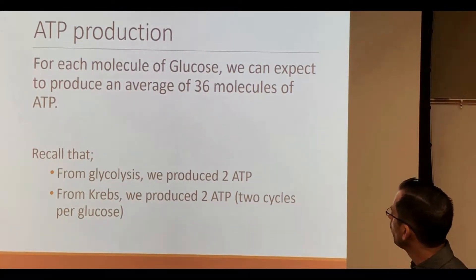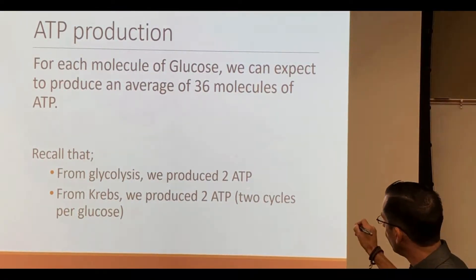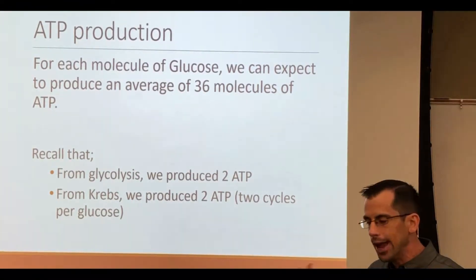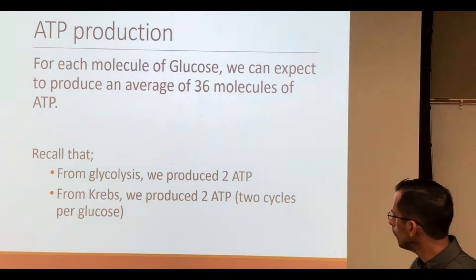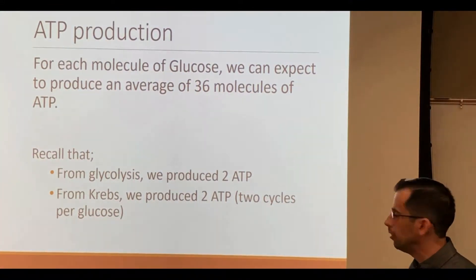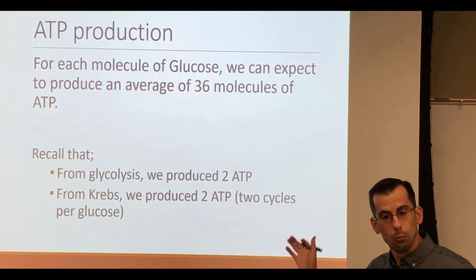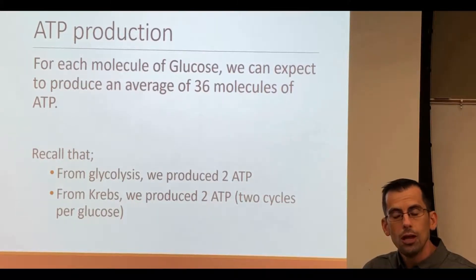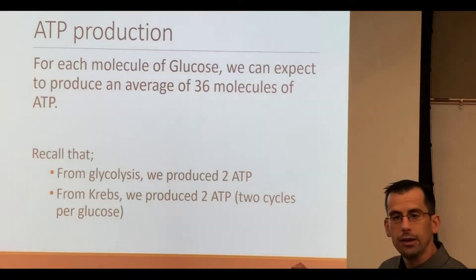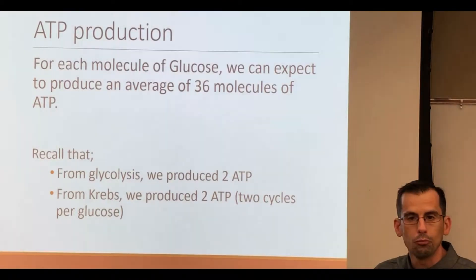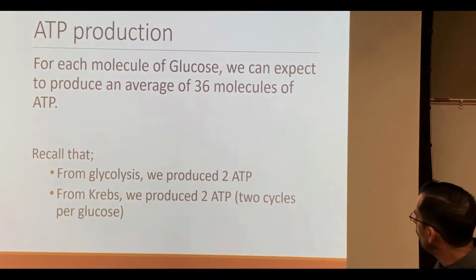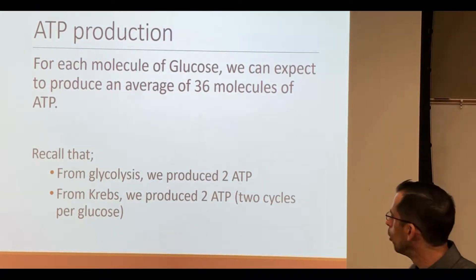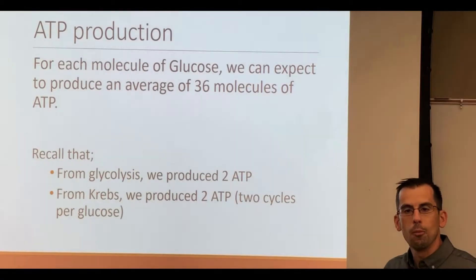From glycolysis, we got a total of two ATPs — we contributed two, got back four, so we got a net gain of two ATPs. From Krebs, we also got two ATPs. For every glucose we break down, we have to go through Krebs twice. Each turn of Krebs gives us a single ATP, so our production so far is a total of two. Adding these together, out of our 36 we've got a grand total of four. So we're not even close, even though we've gotten through two of our biochemical pathways.